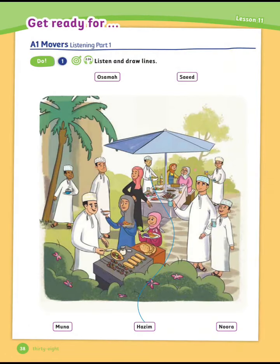Exercise number 1: Listen and draw lines. Listen carefully to the conversations to draw a line between the name and the character. Number 1: Look, Uncle Ahmed, my friends are here for my birthday. Oh yes, that's fantastic. Who's the boy with the bowl of crisps? That's Hazem, he's my best friend.